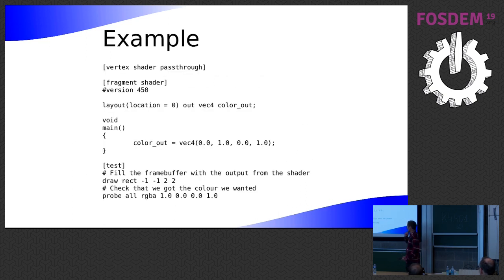So VKRunner is the same idea but for Vulkan. It tries to have the minimal overhead to write a test just with a simple script. So that's an example of a complete script. It has the Windows format with a section for each shader. In this case, for the vertex shader, I've just said vertex shader pass through.